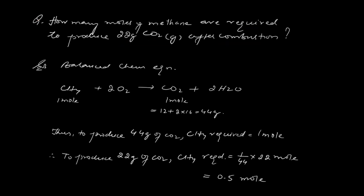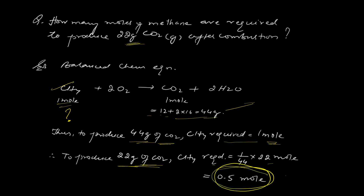Next problem: how many moles of methane are required to produce 22 grams of carbon dioxide? Using the balanced equation and molecular masses, to produce 44 grams of CO2 one mole of methane is needed, so to produce 22 grams of CO2, methane required is 1/2, that is 0.5 moles by the unitary method. That's all — thank you for watching.